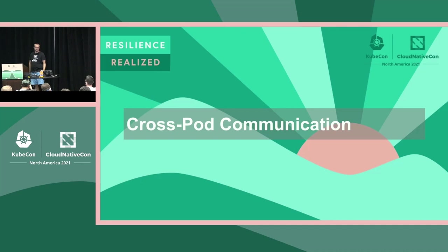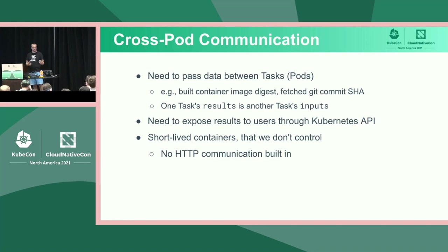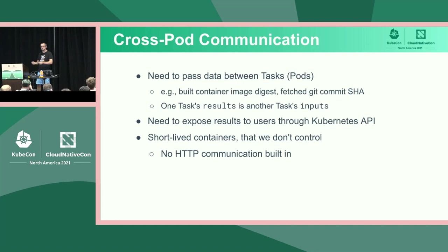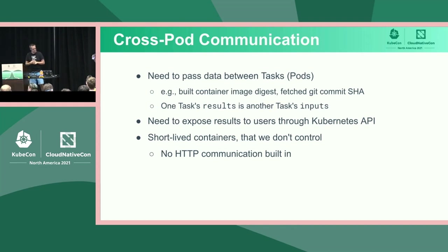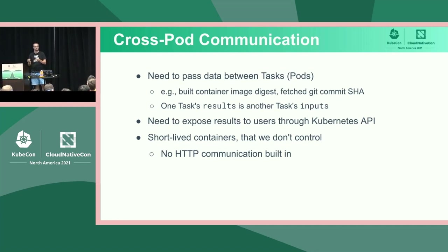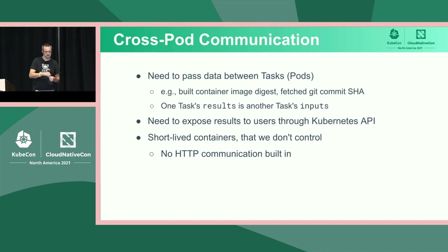Like with containers, we also need to pass data from one pod to another pod efficiently. The canonical use cases are: a task does a git clone and needs to pass the commit that was checked out to the next task; or if it built a container image, it needs to pass the digest to the next task that signs or scans it. We also need to expose that information up to the user through the API, UI, or CLI. These are short-lived containers we don't necessarily control.